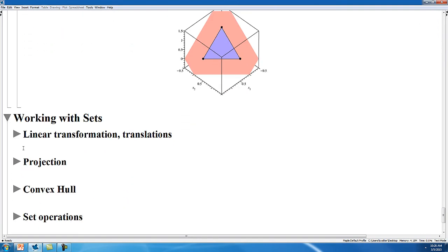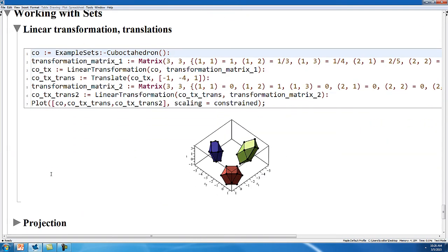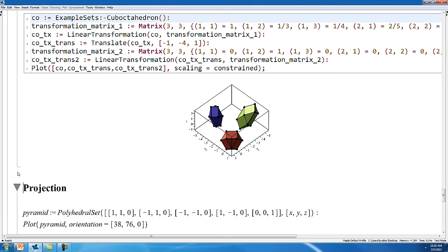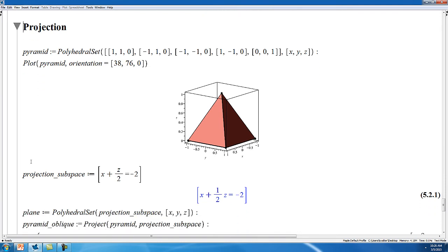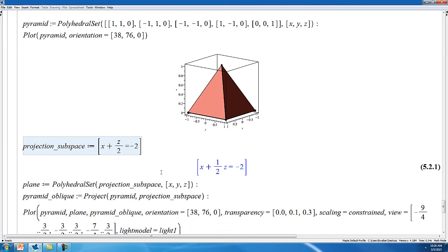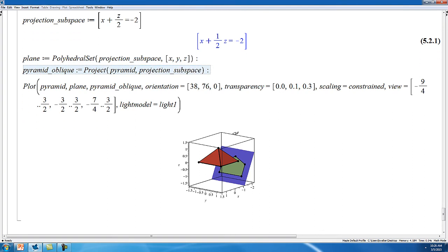There are various commands for working with sets. For example, you can apply transformation matrices and translation vectors to a set. You can also perform projections onto lower dimensional subspaces. So for example, the pyramid seen here will be projected onto the plane defined by this equation. We use the project command to project the pyramid onto this projection subspace, and we can draw all three elements to get a good feeling for what this looks like.